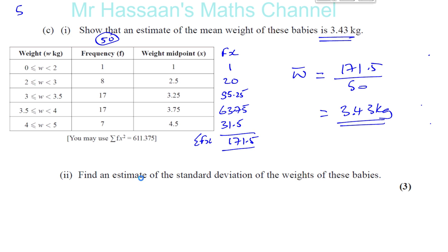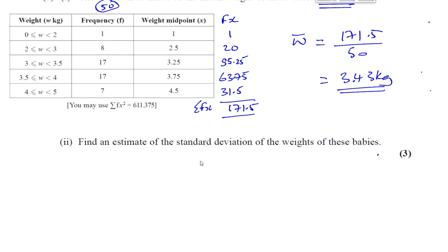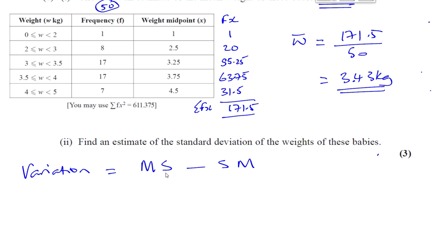Now we want to find an estimate of the standard deviation. The standard deviation tells us about the average variation of the data entries from the mean — how spread out they are. There are some complicated formulas, but there's a simpler one. The variance — which is the square of the standard deviation — equals the mean of the squares minus the square of the mean. To find the standard deviation we take the square root of this.